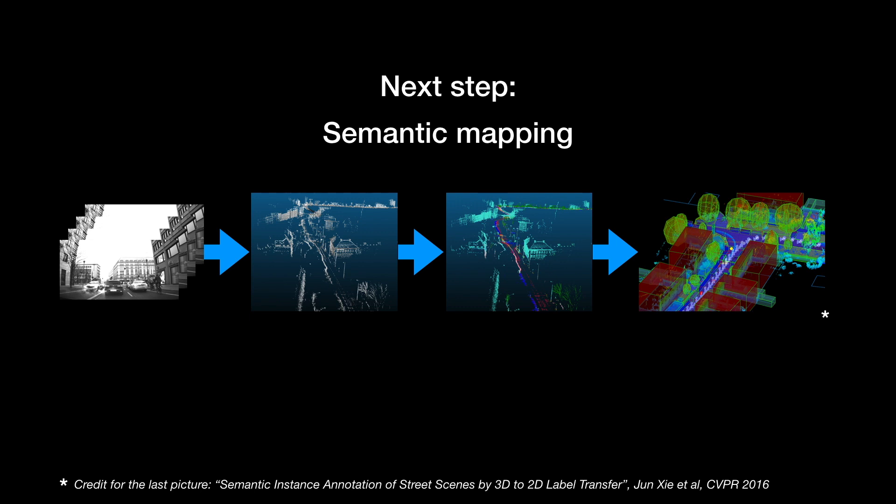The point cloud is then semantically labeled, which can be done either by segmenting the point cloud directly or by semantic segmentation on images and back-projecting the labels to 3D. Next, the labeled point cloud is further abstracted and described, giving us a semantic HD map, which is a compact and accurate representation of the scene.